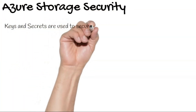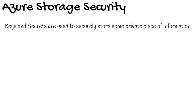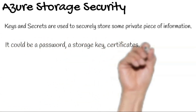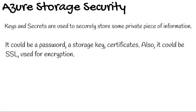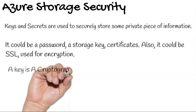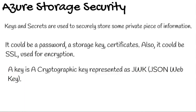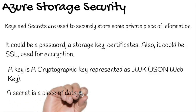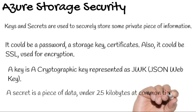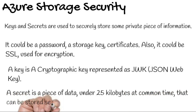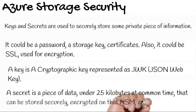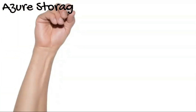Keys and secrets are used to securely store some private piece of information. It could be a password, a storage key, certificates, or SSL used for encryption. A key is a cryptographic key represented as JWK, JSON Web Key — for example, storing a .pfx certificate file that contains a pair of public and private keys. A secret is a piece of data under 25 kilobytes that can be stored securely, encrypted on an HSM, and then retrieved.